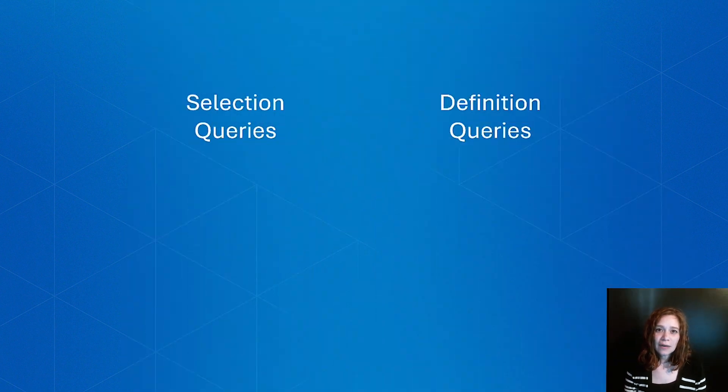Hi, everyone. My name is Sam Oliveira-Silvera and I am an Esri instructor. Today, we're going to be taking a look at two types of queries that you can perform inside of ArcGIS Pro. These queries allow you to select or display data that meet your specific criteria.